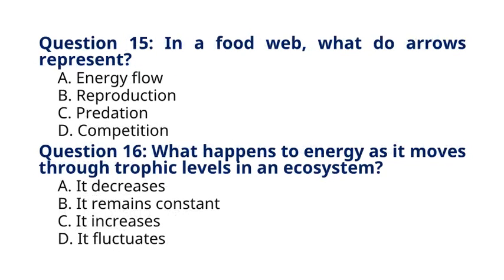Question 15. In a food web, what do arrows represent? A. Energy flow. B. Reproduction. C. Predation. D. Competition. The correct answer to question 15 is option A, Energy flow. Explanation: Arrows in a food web indicate the direction of energy flow, showing who eats whom in an ecosystem.